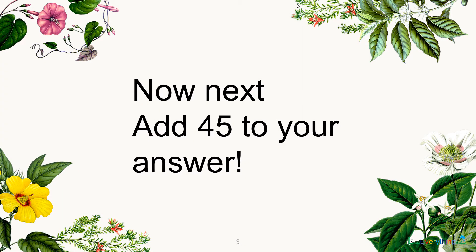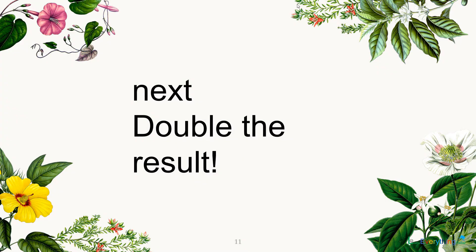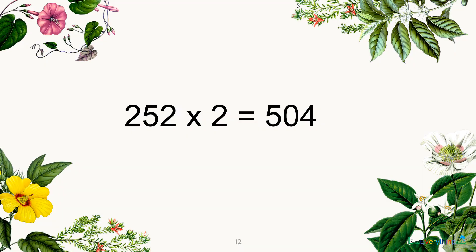Now next, add 45 to your answer. 207 plus 45 is equal to 252. Next, double the result — that means multiply by 2. So 252 multiplied by 2 is equal to 504.